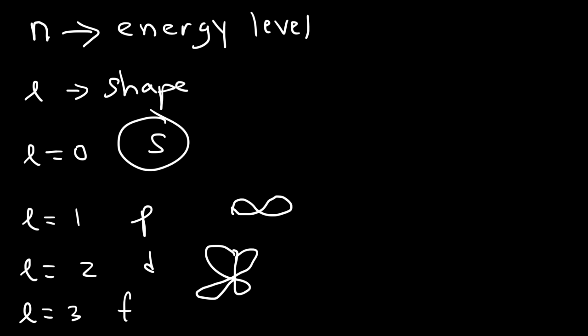n, the principal quantum number, describes the size and the energy level of that orbital. By the way, s also corresponds to the sublevel — it describes the shape of the orbital, but you can also think of it as the sublevel.